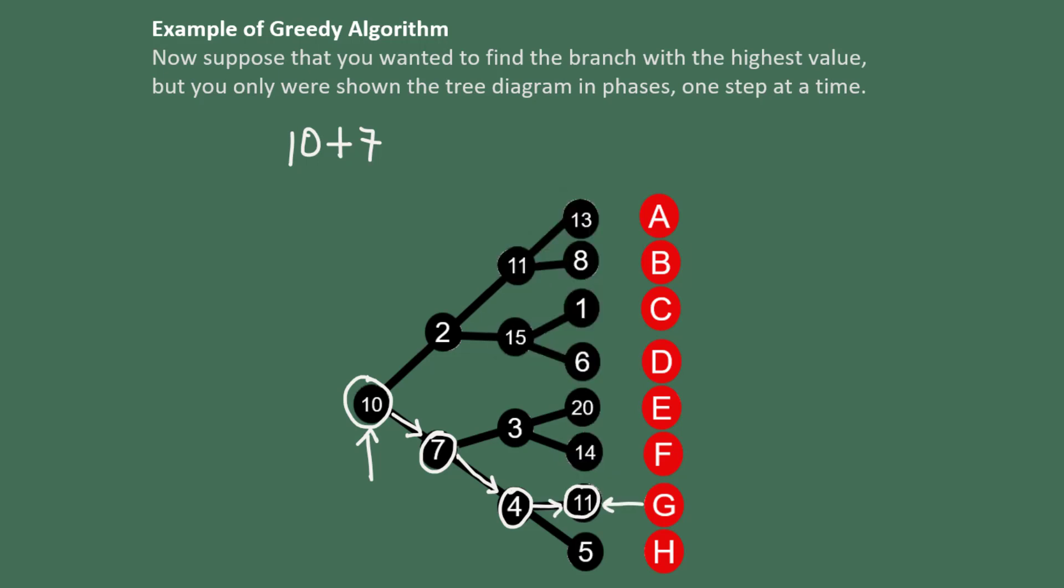11 is larger, so we're going to travel that way. This is the branch G, and the sum is 10 plus 7 plus 4 plus 11, 32.